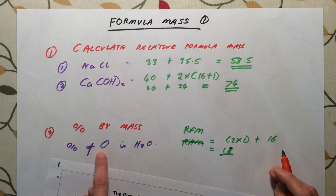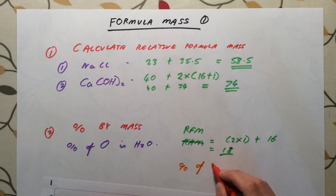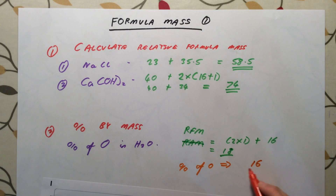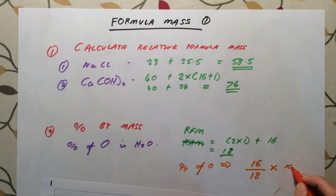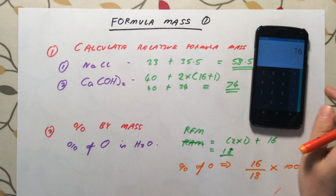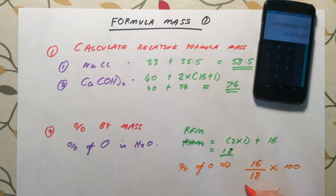We want the percentage by mass of oxygen in H₂O. We take the total mass that oxygen contributes to the overall mass, which in this case is just 16, and divide by the total relative formula mass of H₂O, which is 18. To get a percentage, we multiply by 100. So 16 divided by 18 times 100 gives us 88.88%, which we round to 88.9%. That is the percentage that oxygen contributes to the mass of H₂O.